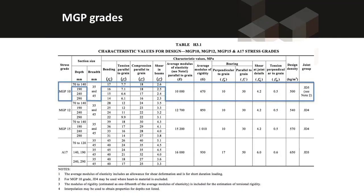A number of properties are also a function of the size of the timber members. For the MGP grades, each of the sizes are listed separately, and different bending, tension, compression, and shear strengths are given for each of those sizes.